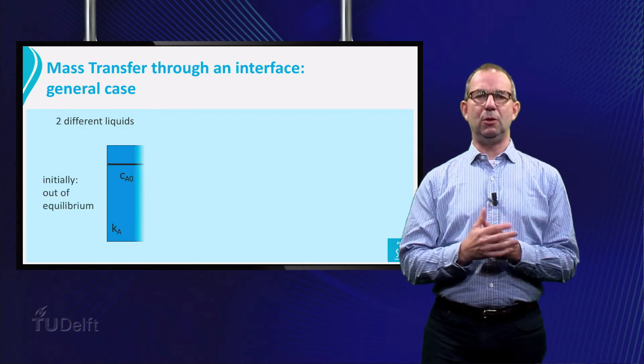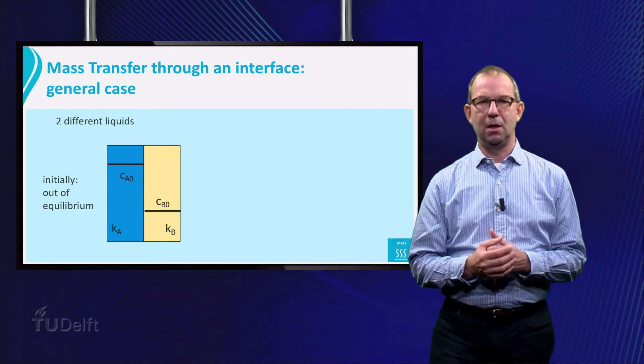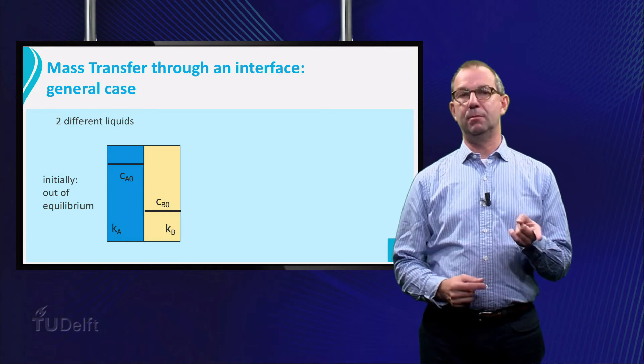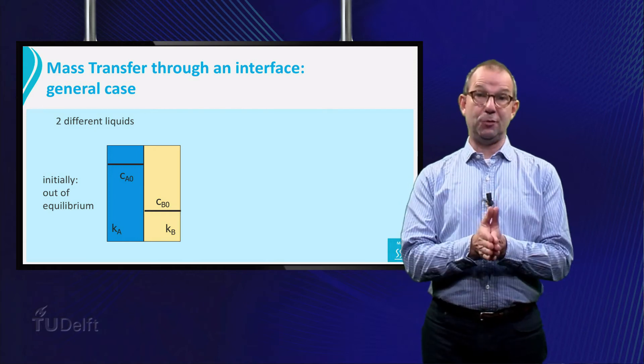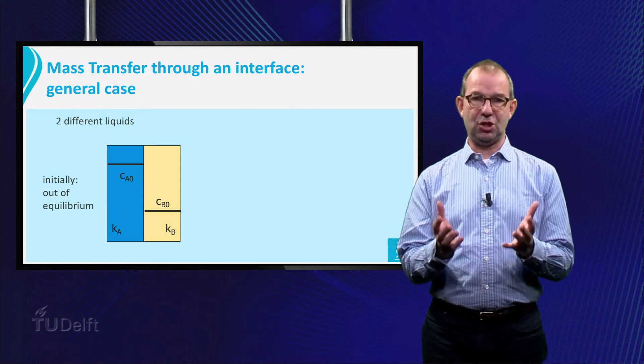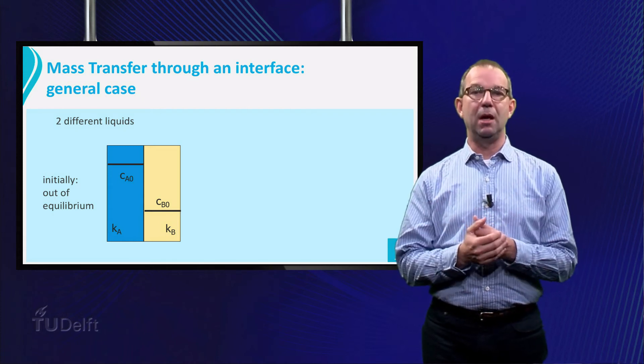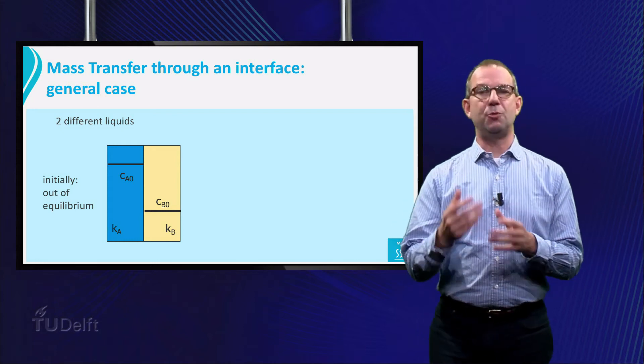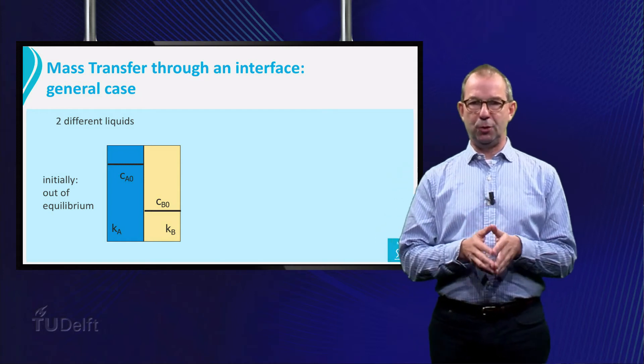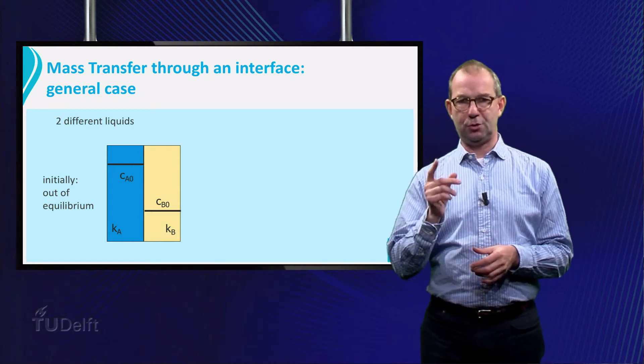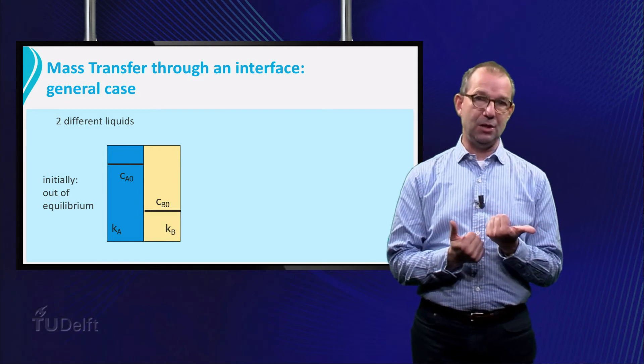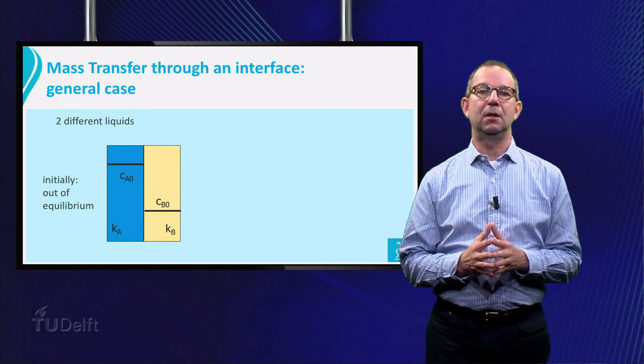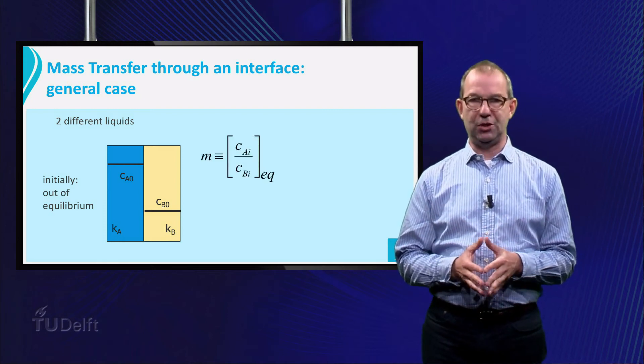Ok, but how to deal with mass transfer across the interface? We are going to analyze the general case. We have two layers, A and B, with an interface formed by them. The concentrations are such that the situation is out of equilibrium as far as the two layers are concerned. But inside a layer, the concentration is uniform. The mass transfer coefficient per layer for transfer to or from the interface is K sub A and K sub B respectively. In equilibrium we have the partition coefficient M given.